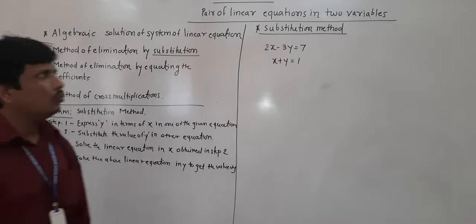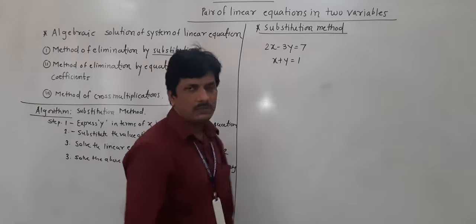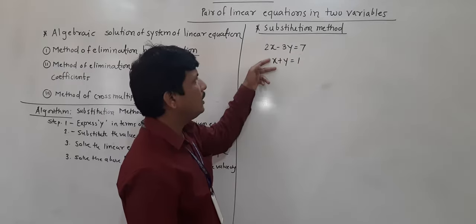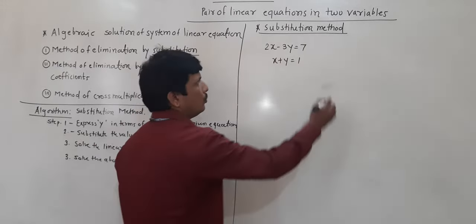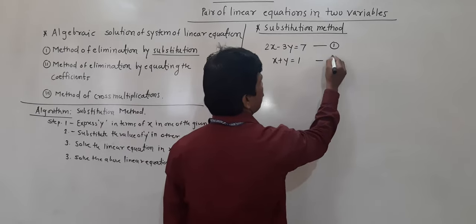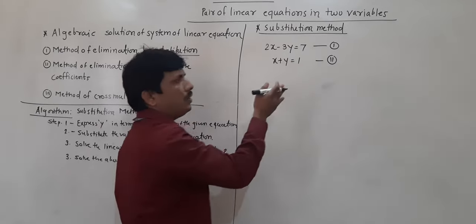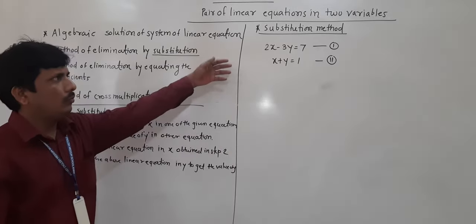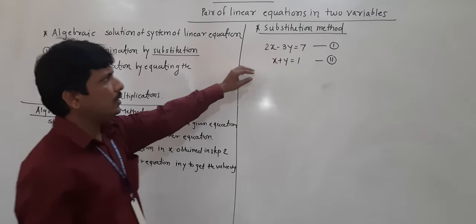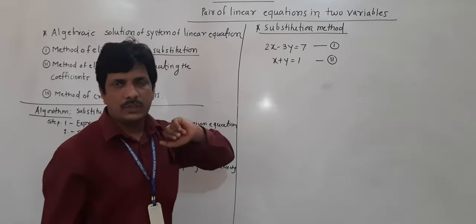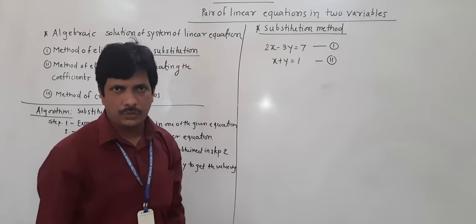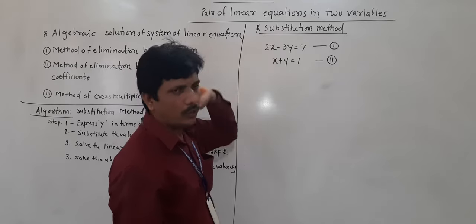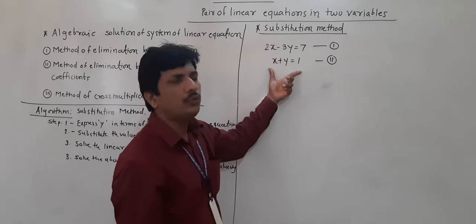I have taken one example here. There are two simultaneous linear equations in two variables. The first one is 2x minus 3y is equal to 7, and the second is x plus y is equal to 1. We have to use the substitution method to find out the values of x and y. Any one equation we can use for the substitution. Here I am going to use the second equation for the substitution.